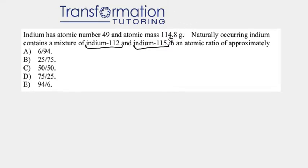The atomic mass given to us, or the atomic mass we see on the periodic table, is basically the sum of all the isotopes taking into account the percent abundance. So whatever isotope is the most abundant, that's what we will see reflected in the atomic mass. For example, our atomic mass is 114.8, which is really close to 115, so between 112 and 115, the atomic mass is very close to 115. Therefore, this isotope should be in much higher percent abundance than 112.